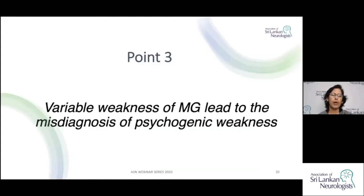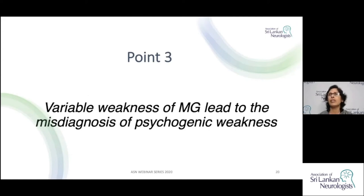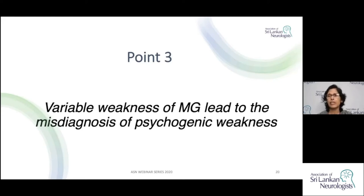The third point: the weakness in Myasthenia is variable. There is fluctuation of symptoms with repeated use, so that variable weakness can lead to misdiagnosis of psychogenic weakness. These patients sometimes get up from a chair and on another occasion cannot. You particularly encounter this in a young female, making it tempting to think it is psychogenic. You need to be extremely careful not to miss it, as it is a life-threatening condition.